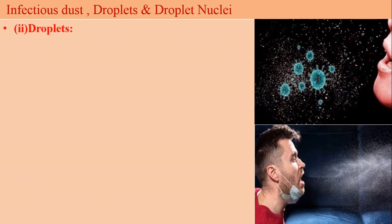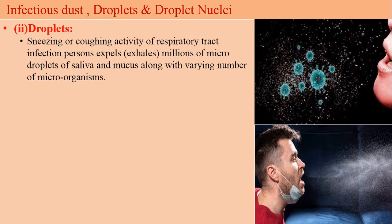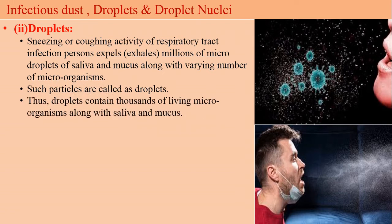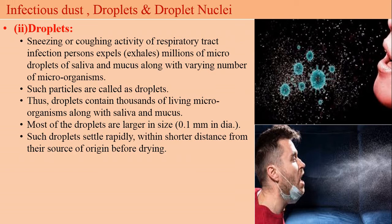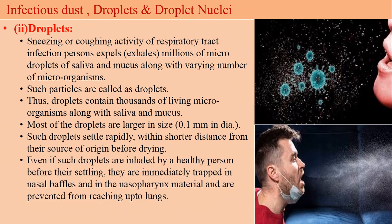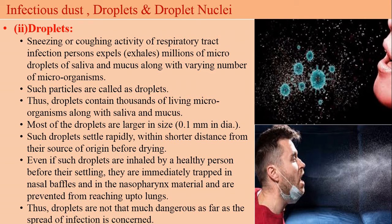The next important term is droplets. The sneezing and coughing activity of respiratory tract infection persons expels millions of micro-droplets of saliva and mucus along with large numbers of microorganisms — such particles are called droplets. The droplets contain thousands of living microorganisms along with saliva and mucus. Most droplets are larger in size, with an average diameter of 0.1 mm. Such larger droplets settle rapidly within a short distance from their source before drying. Even if inhaled by a healthy person before settling, they are trapped in nasal passages and nasopharynx and prevented from reaching the lungs. Thus, droplets are not that dangerous as far as the spread of infection is concerned.